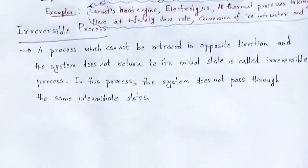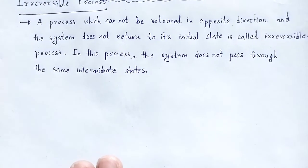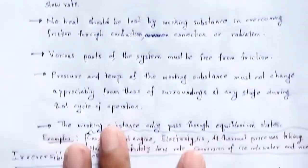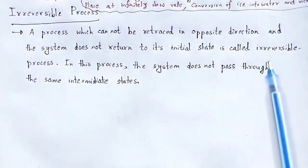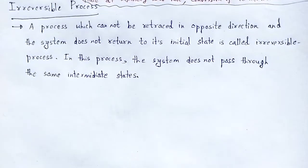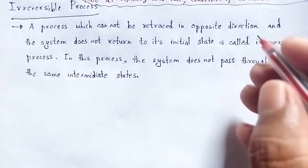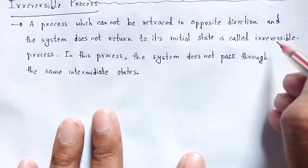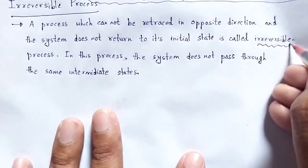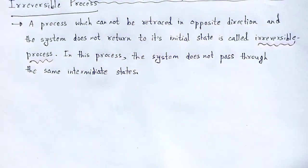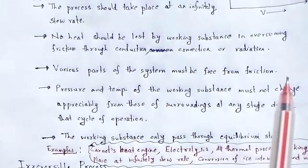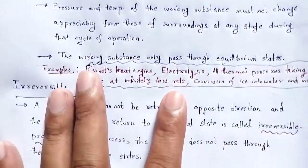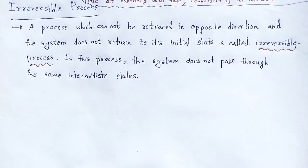Now the opposite of reversible process is known as the irreversible process. An irreversible process is one which cannot be retraced in opposite direction and the system does not return to its initial state. So here we cannot retrace the thermodynamic process in opposite direction, and the system does not pass through the same intermediate states as in the case of a reversible process.